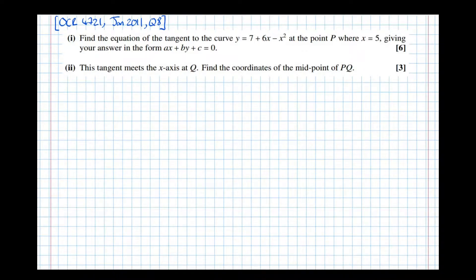In this video, we're going to have a look at finding the equation of a tangent to a curve at a given point. In this particular example, it asks us to find the equation of the tangent to the curve y equals 7 plus 6x minus x squared.